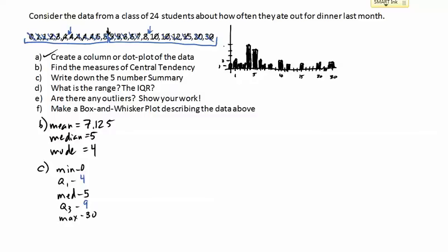Now for letter D: the range. The range is the max minus the min, so 30 minus 0, which means the range is 30.